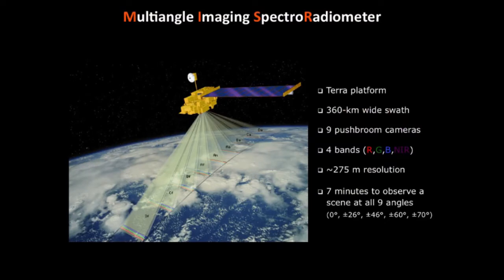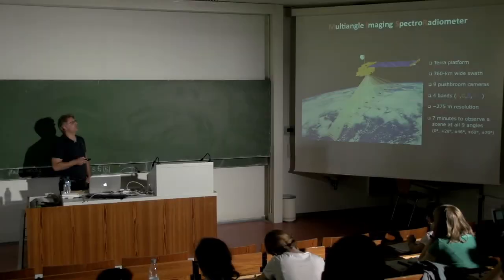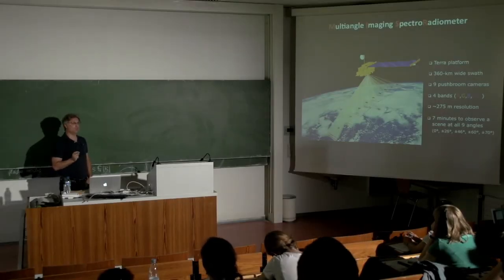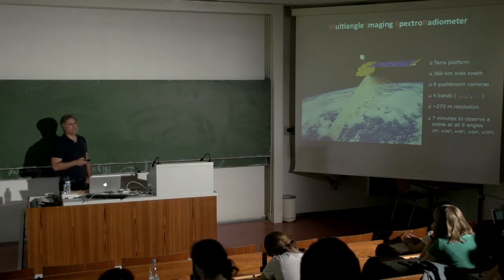The unique feature of the instrument is that in addition to the downward-looking nadir view, it has eight additional oblique view angles. As the satellite moves from north to south, in addition to the nadir view you have a forward-looking 70-degree view, 60 degrees, 46 and 26 degrees, and you have the same angles looking backwards. This instrument has four spectral bands — basically the RGB visible bands and the near-infrared band.